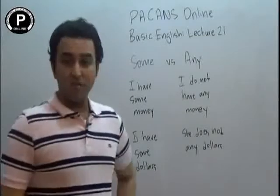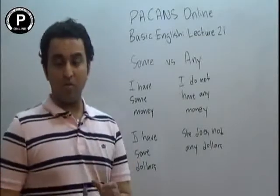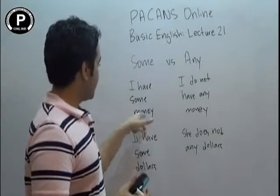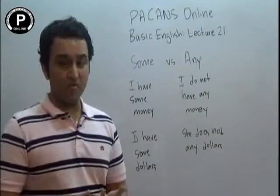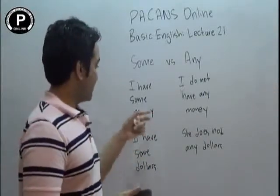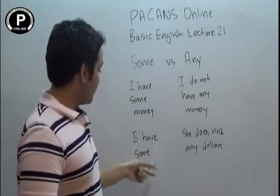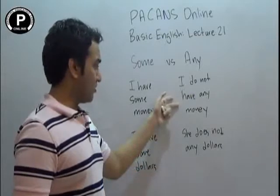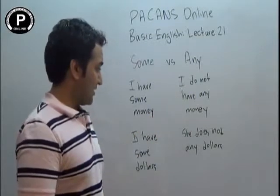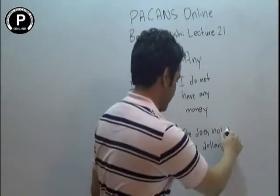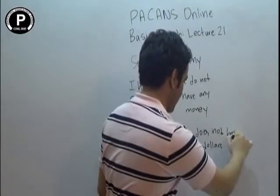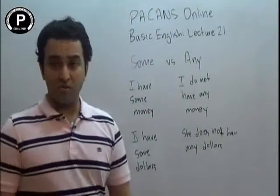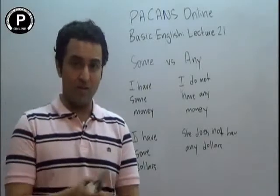In the last lecture I told you that I am going to give you some examples for these. So: 'I have some money' — here money is used as uncountable. 'I have some dollars' — countable. 'I do not have any money' — uncountable. 'She does not have any dollars' — countable. So 'some' and 'any' can be used for both countable and uncountable nouns.